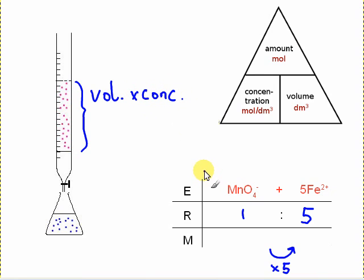I can turn that into an amount using this equation here. I've represented it in a triangle. So amount equals concentration multiplied by volume. Note that the volume is in decimetre cubed. So if I have it in centimetre cubed, I need to divide by a thousand.